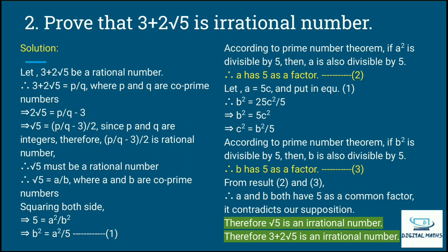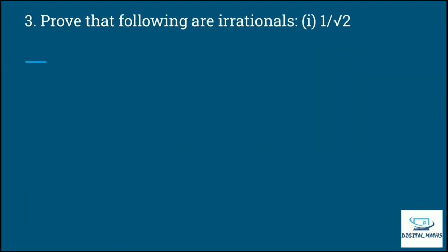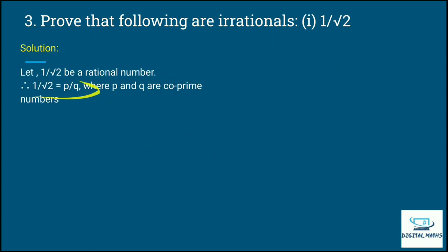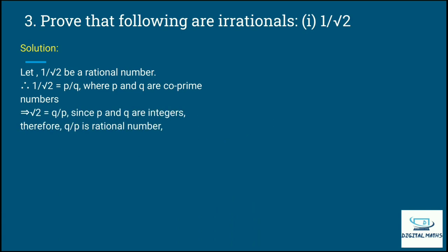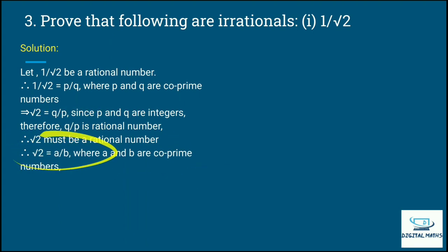Questions 1 and 2 were of the same type, and on that basis question 3 has three sub-questions. First: Prove that 1 upon root 2 is an irrational number. Let 1 upon root 2 be a rational number, so 1 upon root 2 equals p by q where p and q are co-prime numbers. From this, root 2 must be a rational number, and then a and b are co-prime — same steps follow.